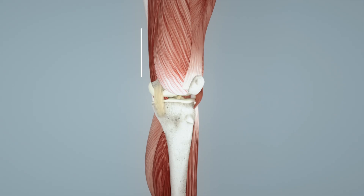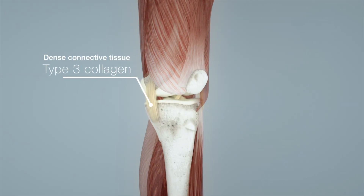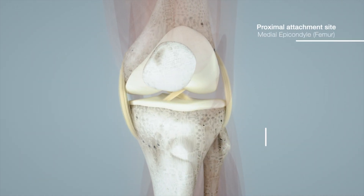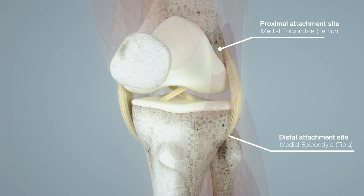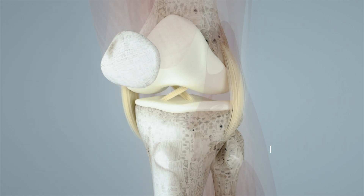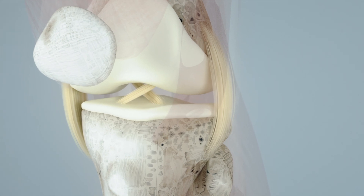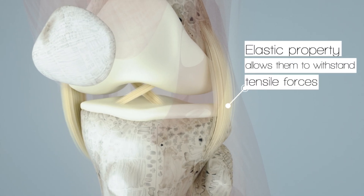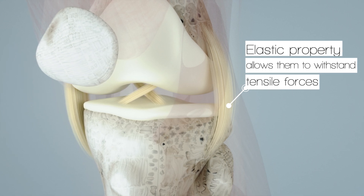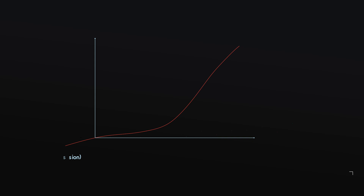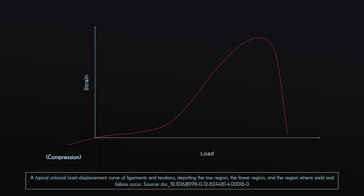In simple terms, ligaments comprise dense connective tissues made primarily of collagen fibres. They link bones together across joints, providing mechanical stability. But ligaments are different to bones in that they possess a degree of elasticity that allows them to withstand tensile forces and return to their original shape once those forces are removed. Injury to a ligament occurs when the force applied to the ligamentous tissue exceeds its biomechanical threshold, and this leads to damage.